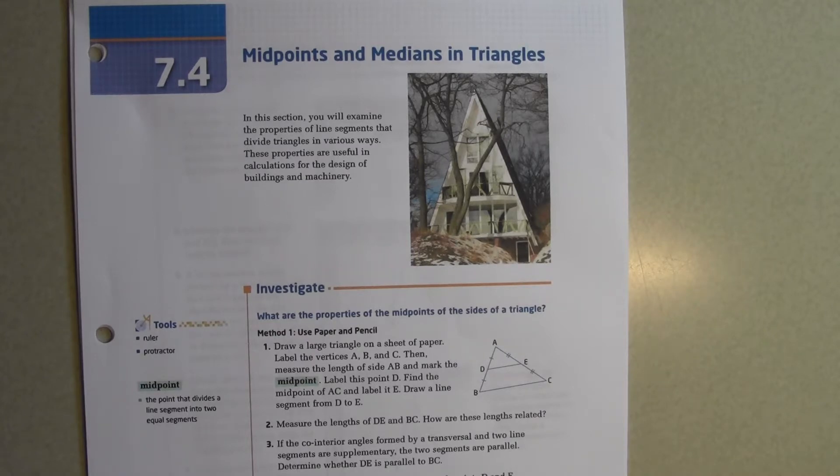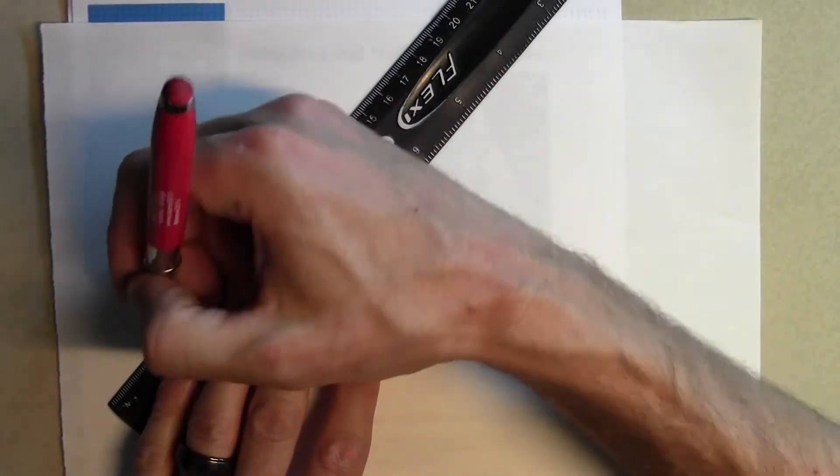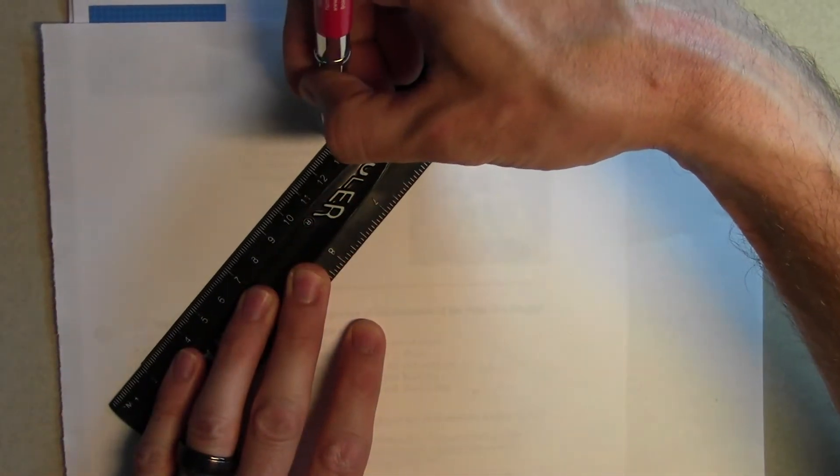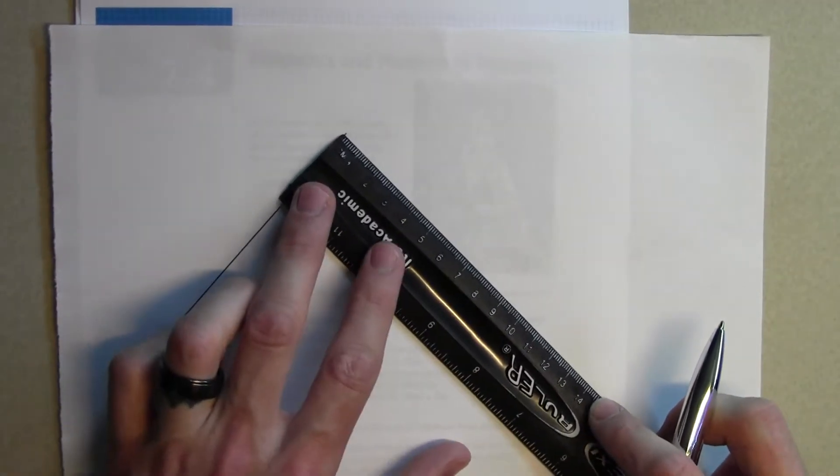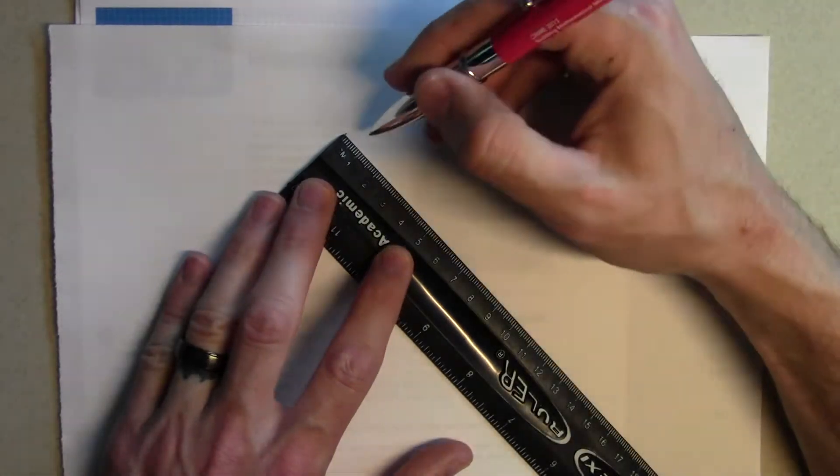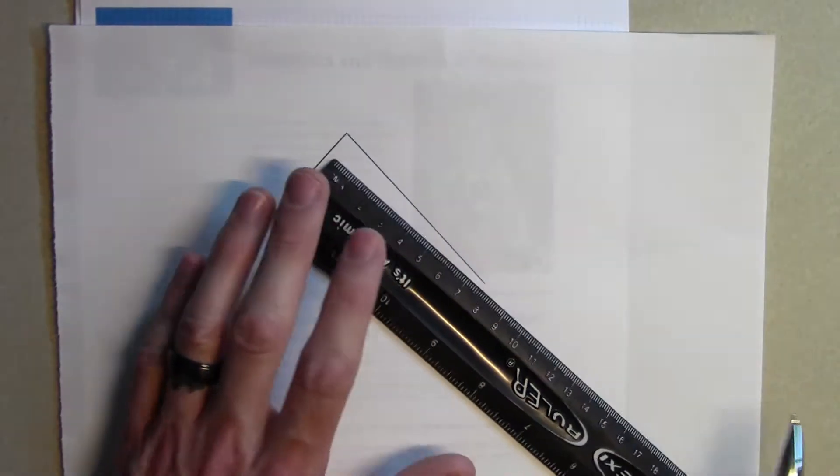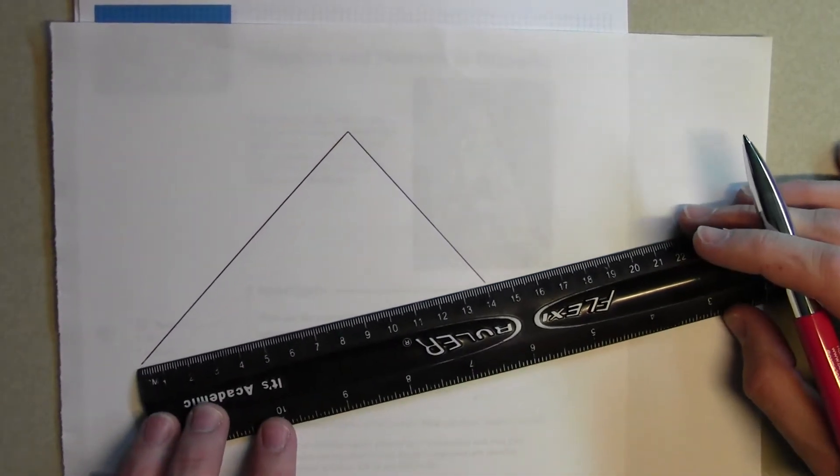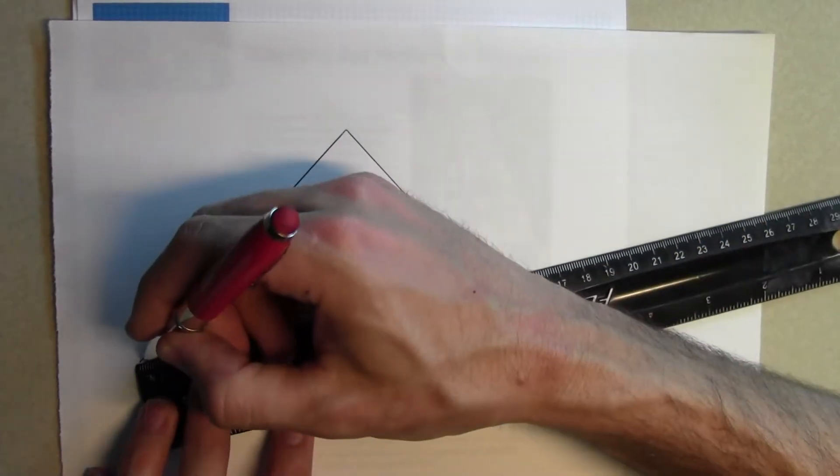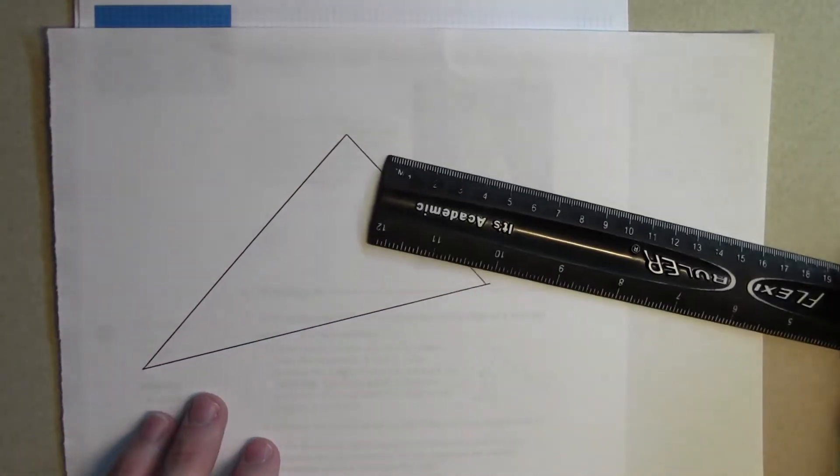What are the properties of the midpoints of the sides of a triangle? So the first step tells us to draw a large triangle on a sheet of paper, label the vertices A, B, C, and D, then measure the length of side AB and mark the midpoint. We're going to draw a large triangle and this should work for any triangle. The only thing I would suggest is try to be fairly straight with your lines.